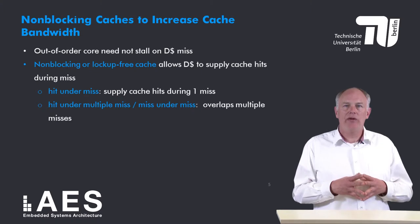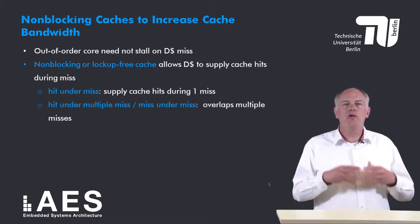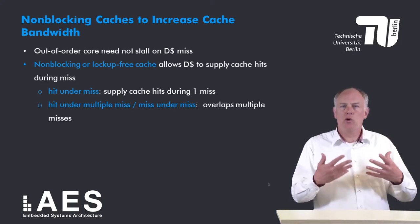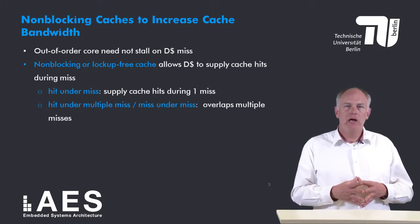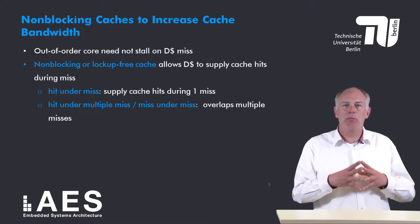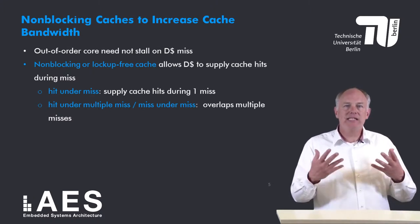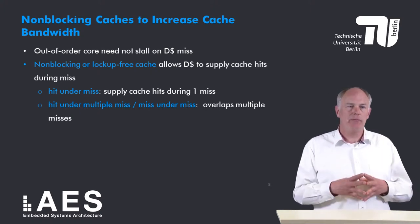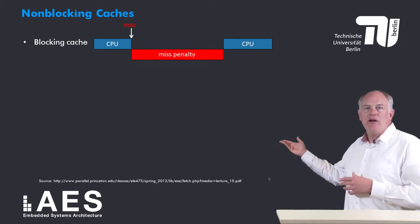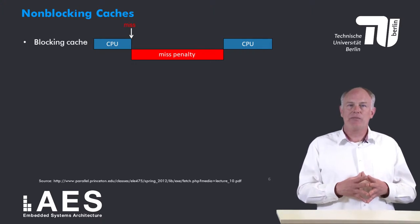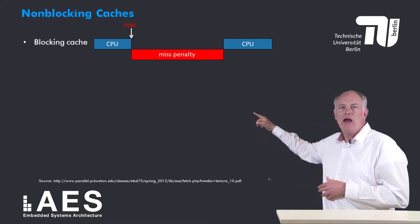The third technique to increase cache bandwidth is non-blocking caches. Non-blocking caches are based on the observation that out-of-order cores do not have to stall on a data cache miss. A non-blocking, also called lockup-free, cache allows the data cache to supply cache hits while a miss is being handled. The simplest scheme is called hit-under-miss, which allows the cache to supply hits during one miss. A more complex option allows several outstanding misses, called hit-under-multiple-miss or miss-under-miss. In a conventional blocking cache, the CPU computes, incurs a miss, stalls until the miss is handled, and then continues executing.